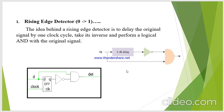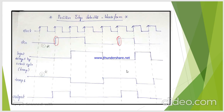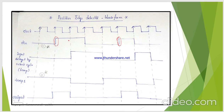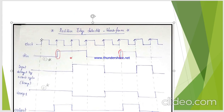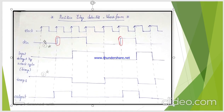Let's see how it works with the help of a waveform. I have my clock signal and my D input signal. This temp signal is the output that I got from the D flip-flop. It will delay the input signal by one clock cycle.